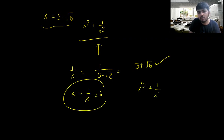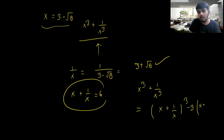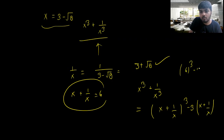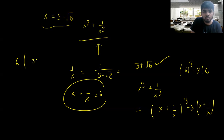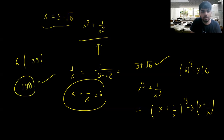We use the identity: x³ + 1/x³ = (x + 1/x)³ - 3(x + 1/x). Substituting, that is 6³ - 3 × 6. Solving this gives 198 as the answer.